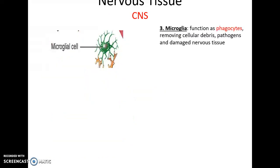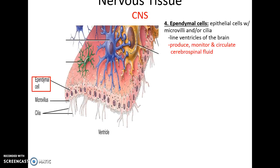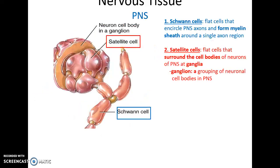Microglial cells wander around in the central nervous system acting as phagocytes — they engulf and remove cellular debris, pathogens, and damaged nervous tissue. Ependymal cells are specialized epithelial cells that line the ventricles of the brain. They produce cerebrospinal fluid into the ventricles and use their cilia to move that fluid throughout and around the brain and spinal cord.